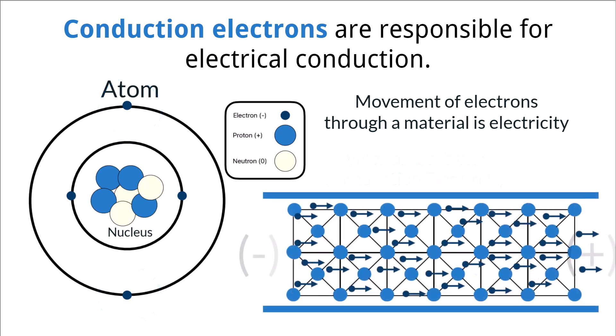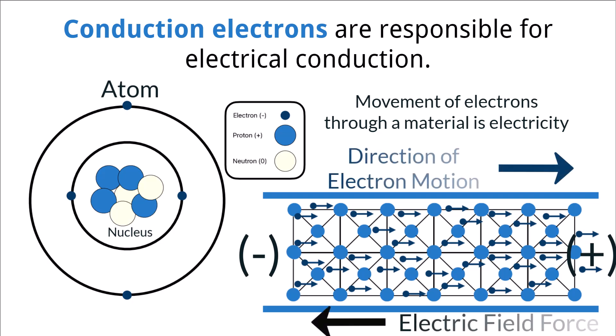This force is generated by using an electric field and creating a potential charge difference between two points on the material. The direction of the electric field force is described as the direction a positive charge would travel. In the case of our piece of copper, if the electric field has a greater positive charge on the right of the material, then the electrons, which carry a negative charge, will begin drifting towards the positive end. In this way, the electron movement will be opposite of the electric field direction.